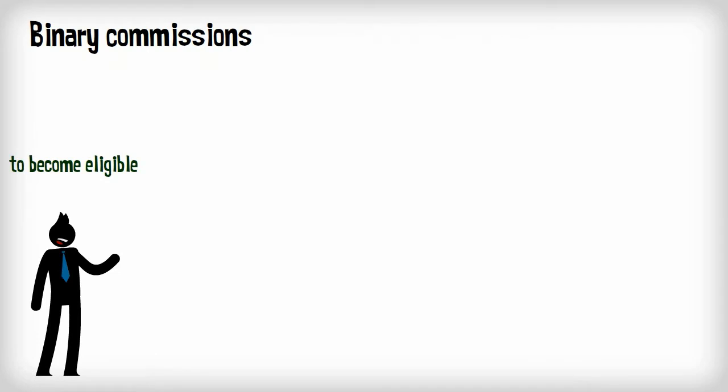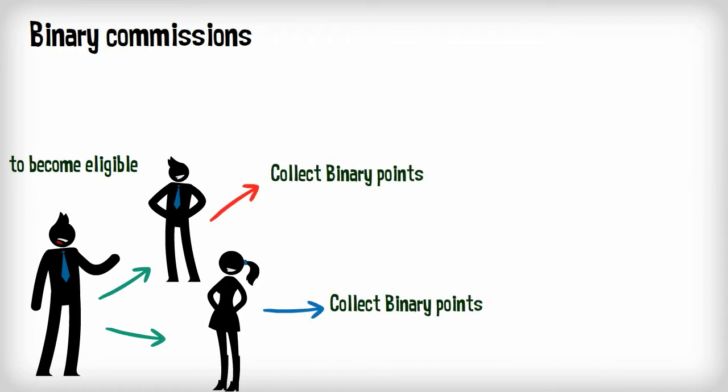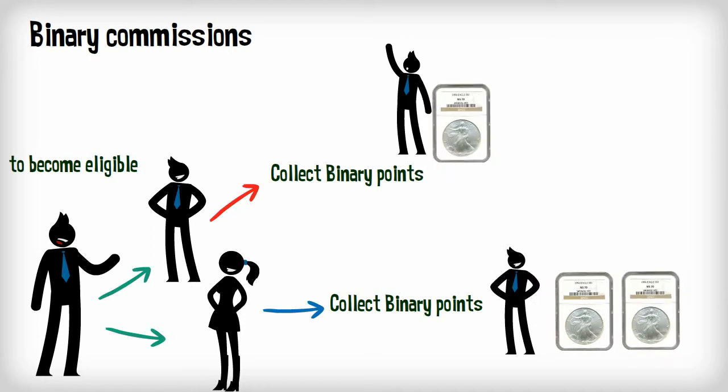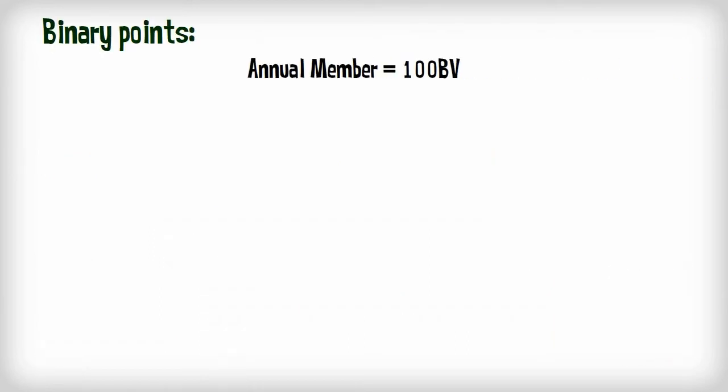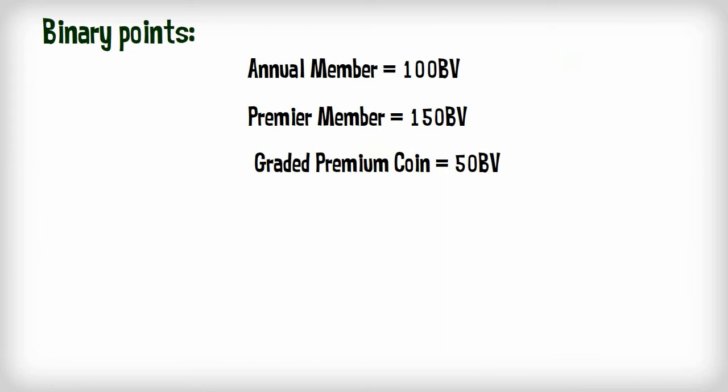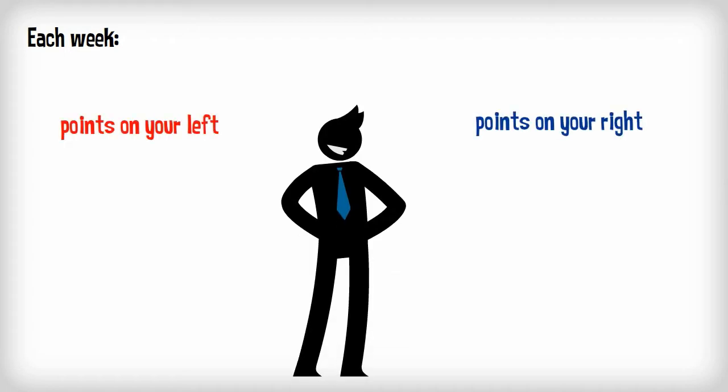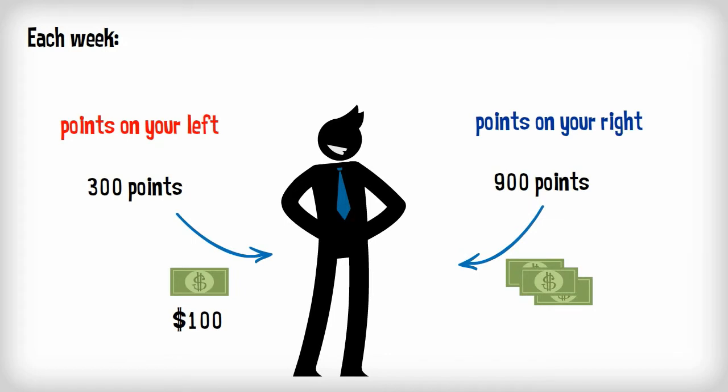You become eligible to earn commissions when you refer two people, one on the left and one on the right. Anytime a new member signs up or someone purchases a coin, points are generated in your binary. One hundred points when an annual member signs up, one hundred and fifty points when a premier member signs up, fifty points anytime someone orders a coin below you. Each week, the company adds up the points on your left and the points on your right. For every set of three hundred points on each side, you'll earn a $100 cycle bonus. This income is paid out weekly and this will be a nice source of recurring income for you.